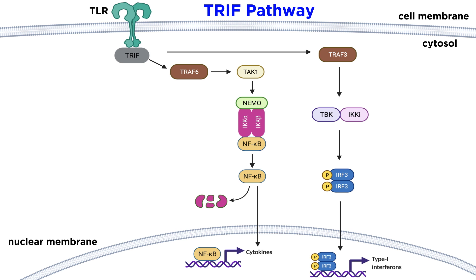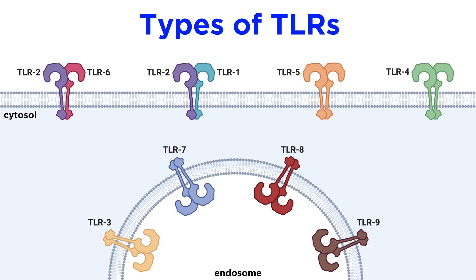Different TLRs use different adapters, or combinations of adapters, which allows the cell to tailor its response to the type of threat at hand. Now that we've talked generally about how TLRs work, let's go through some of the most well-studied TLRs to get an idea of what kinds of PAMPs they recognize, and to help build our familiarity with these receptors.